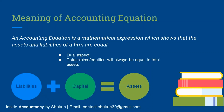This is the basic accounting equation. The relationship between the claims, equities, and the assets is referred to as the accounting equation. This relationship is shown through the equation: assets are always equal to the total of liabilities — that is the claim towards outsiders — and capital, that is the claim towards the owner.